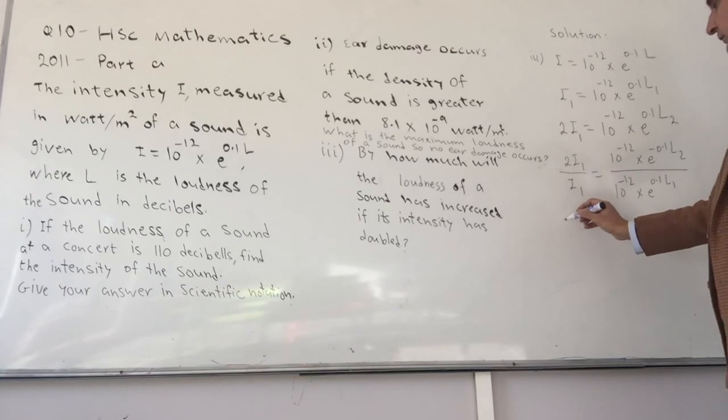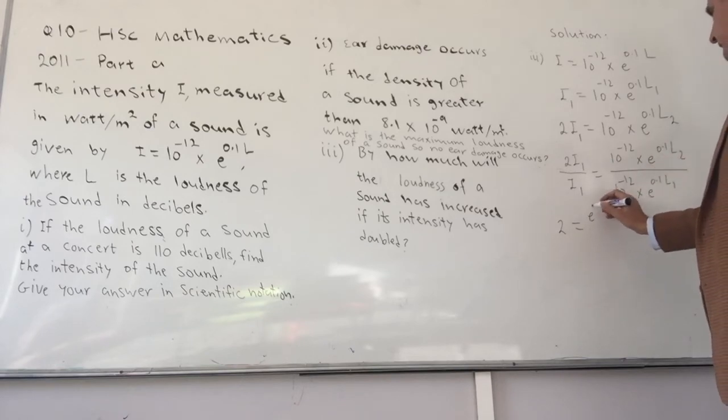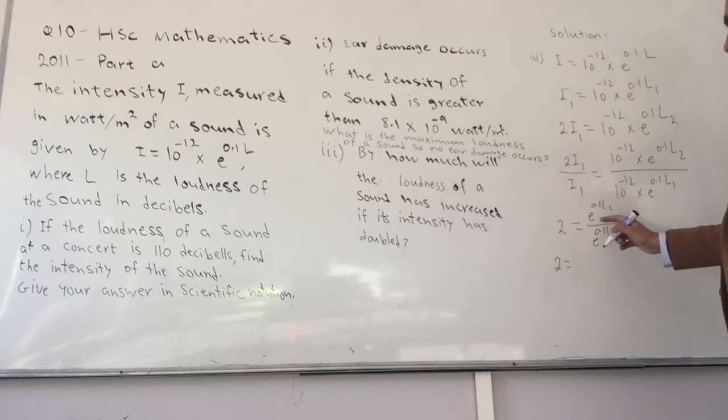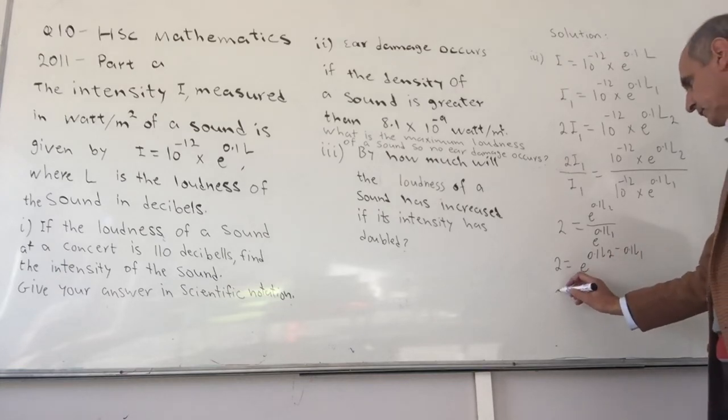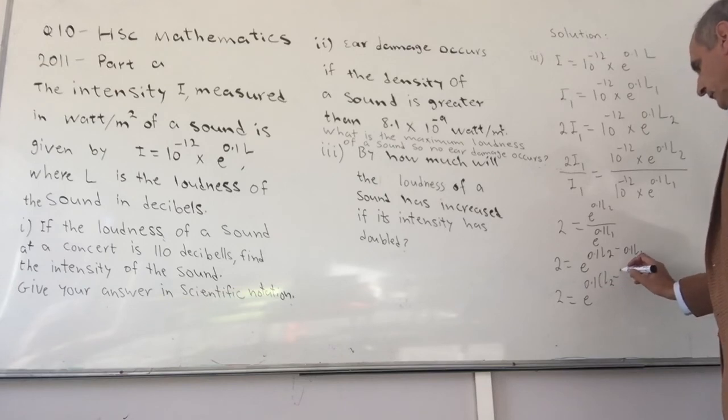Now I1 and I1 cancel, so you get 2. And 10 to the minus 12 and 10 to the minus 12 cancel, and you get e to the 0.1L2 over e to the 0.1L1. When we have 2 powers of e divided, we can subtract the powers, so this becomes e to the 0.1 times (L2 minus L1).